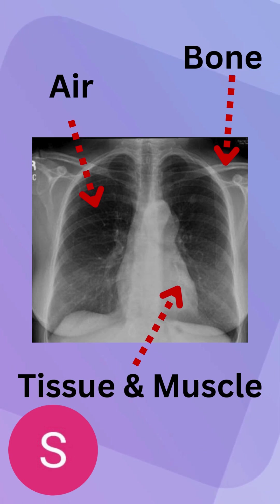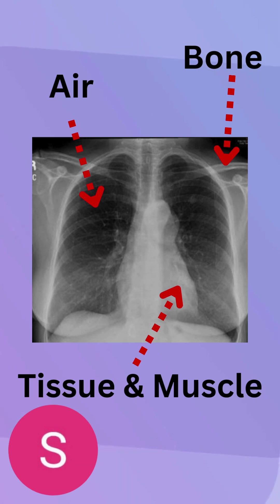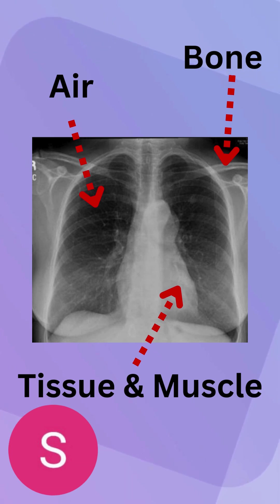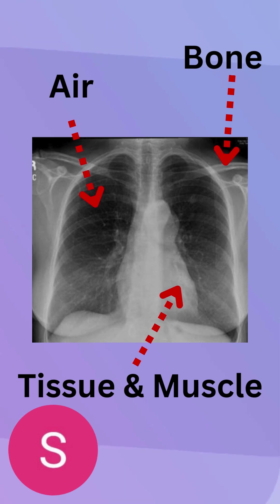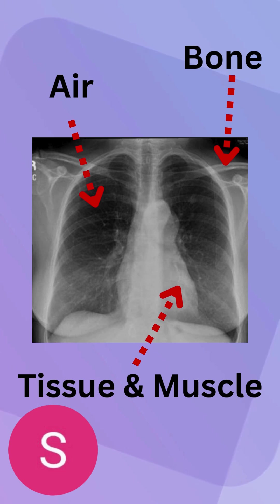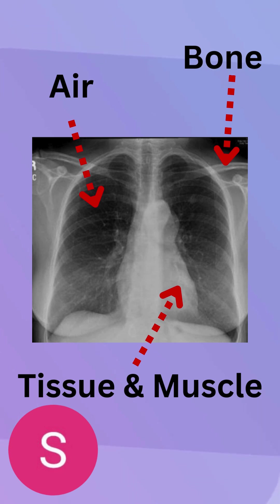Our background is going to be black, and it's going to be sorted with the air represented in the lungs, so we'd say it should be the same gradient. Bone is going to be that light, translucent type of color gradient, and the tissue and muscles are going to be the grayish light.